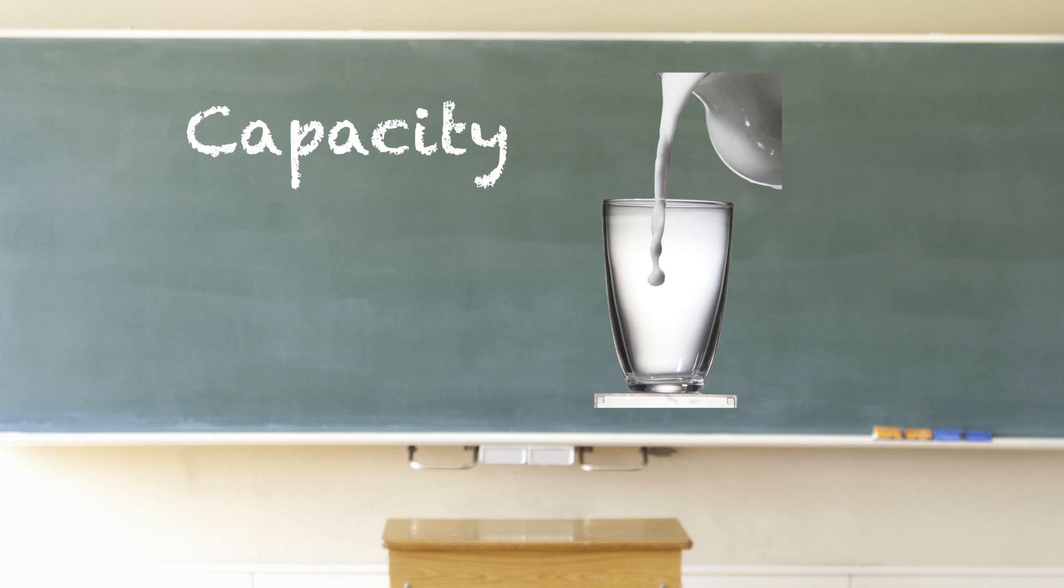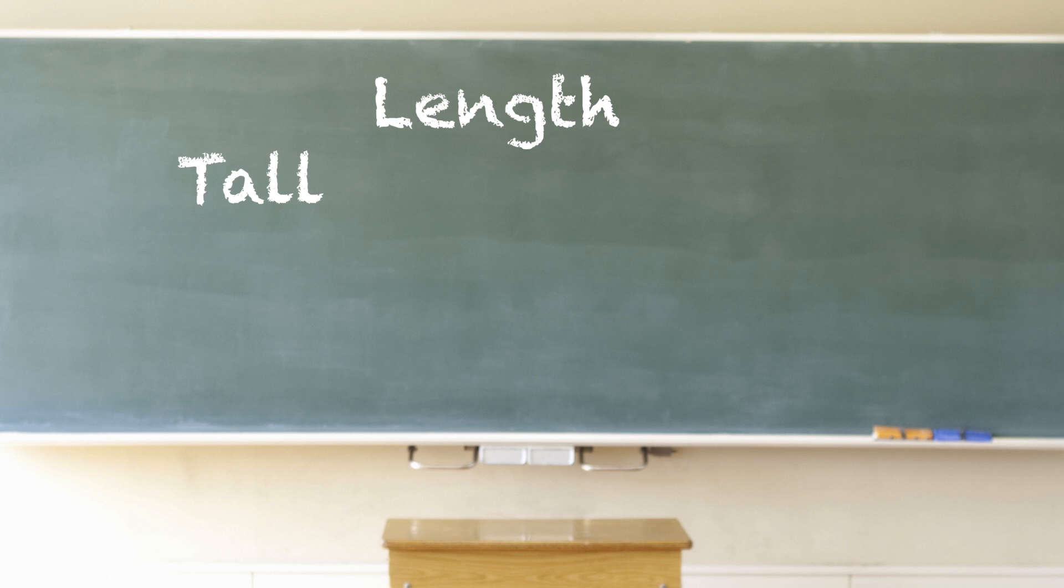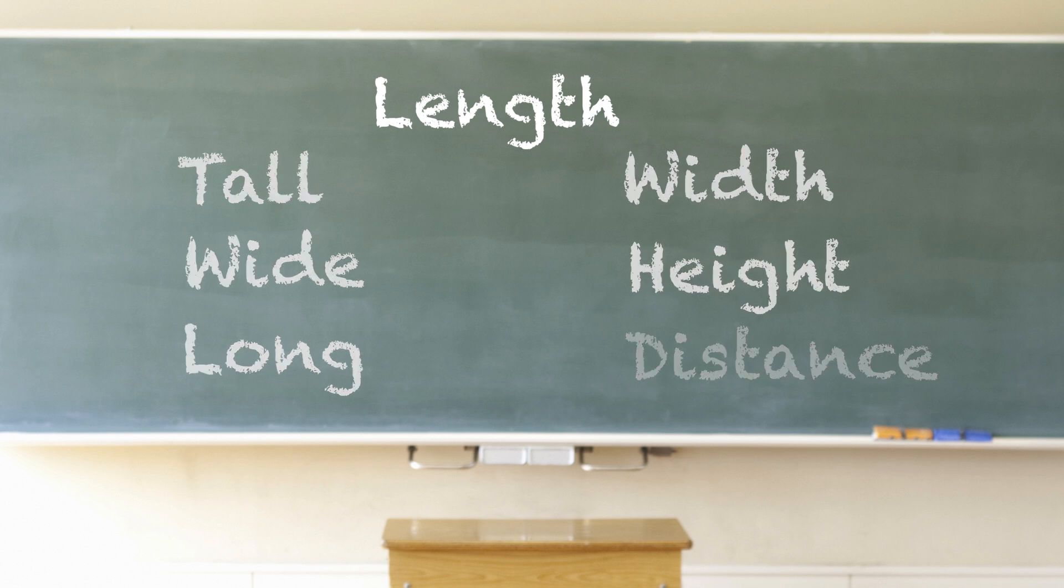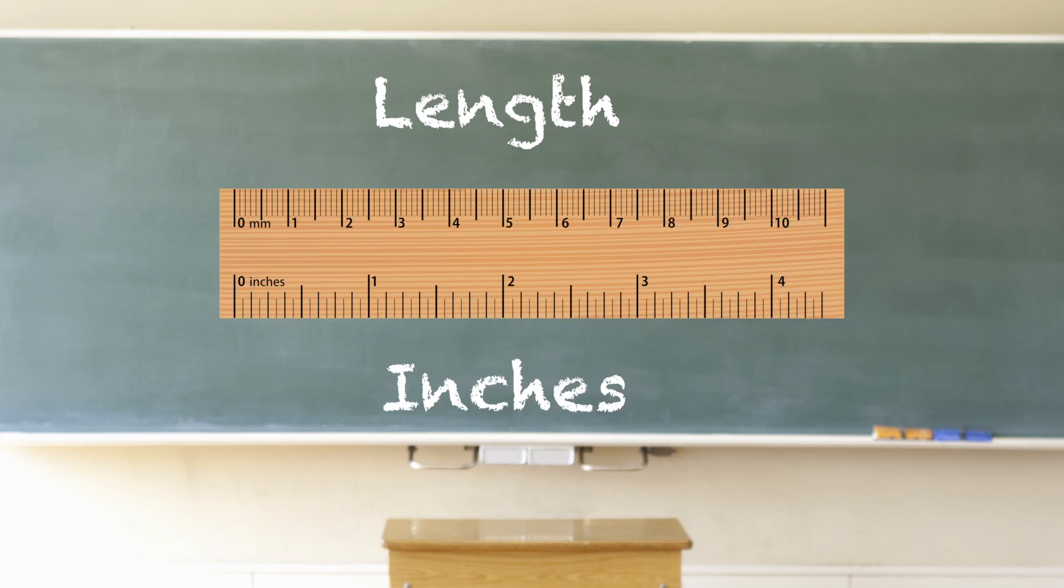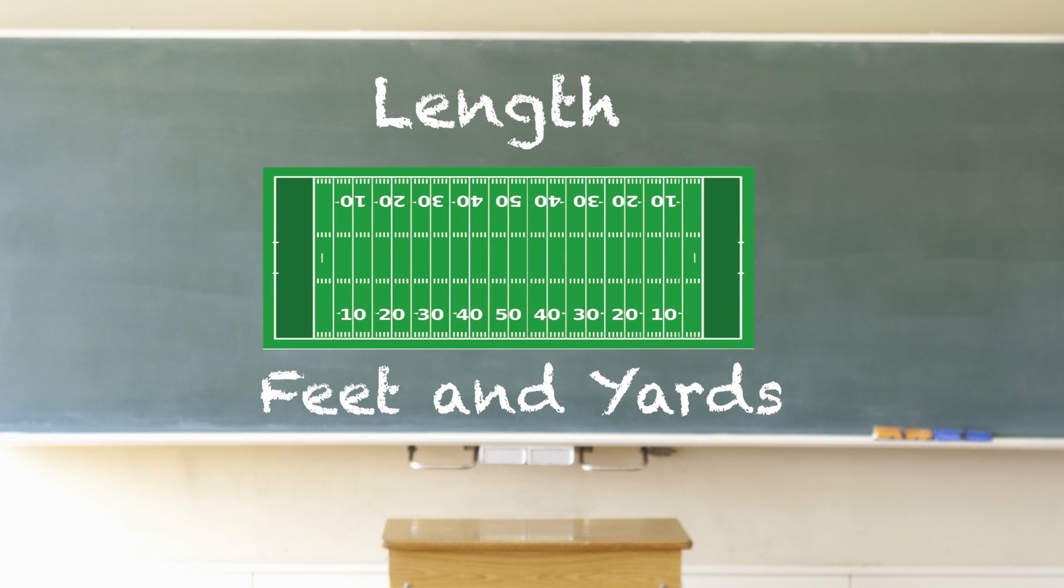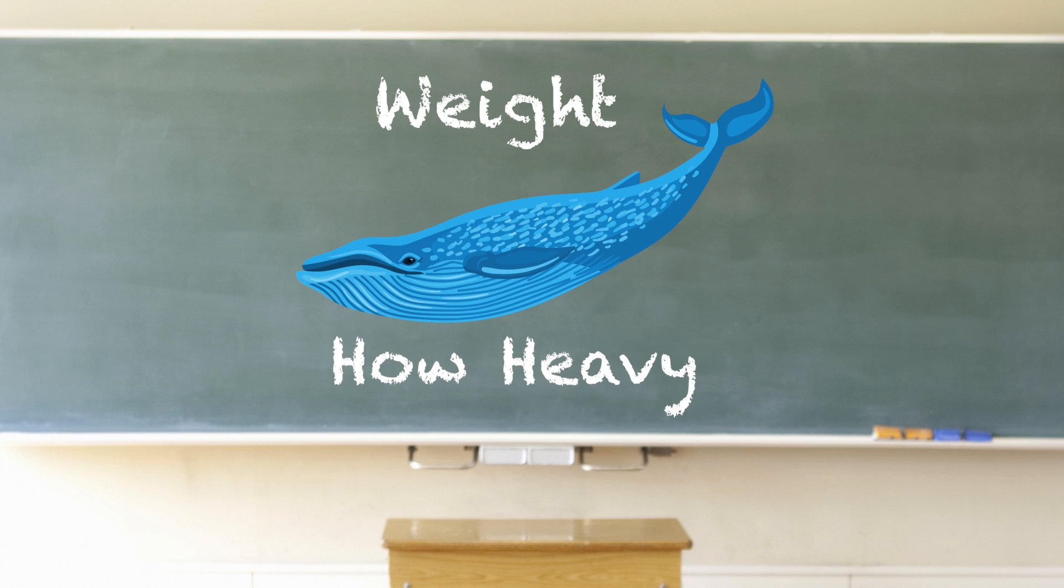Length is how tall, wide, or long something is. Other words related to length include width, height, and distance. Length is measured in inches, feet, yards, or miles. Weight is how heavy something is. Other words used for weight include mass, bulk, or heaviness. Weight is measured in ounces, pounds, or tons.